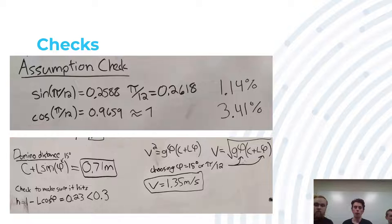Alright, now for a couple of checks we made to check that our solution is valid, that the mass or the ball would indeed hit the domino at our set velocity from that angle. So, just to verify our approximations for the small angle of sine and cosine for 15 degrees, you can see we have a 1.14% error and a 3.41% error, respectively.